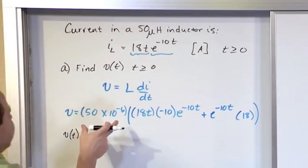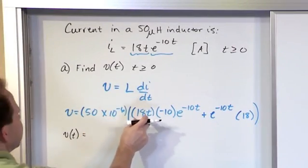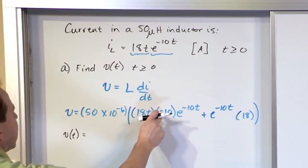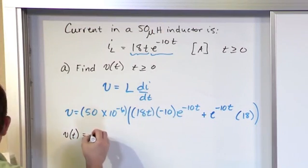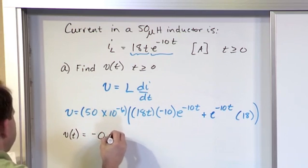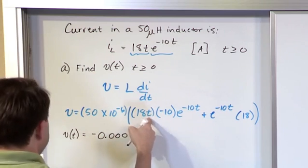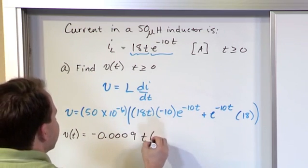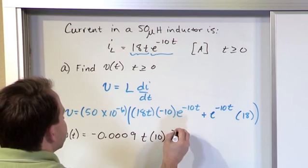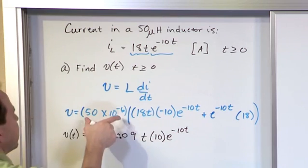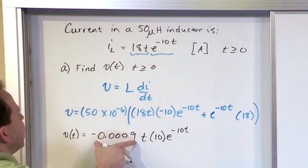Now in order to simplify it, let's take this 50 times 10 to the minus 6 and let's multiply by this 18. Notice we also have a negative there. So what we're going to have is negative 0.0009 times the t here. We still have times 10. We haven't done that yet. e to the minus 10 t. I could multiply by 10 here, but you'll see why we're kind of keeping it like this for now. What we've done is multiply this times the 18 times negative 1.